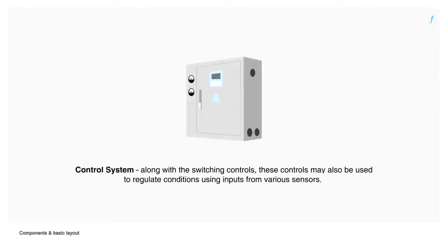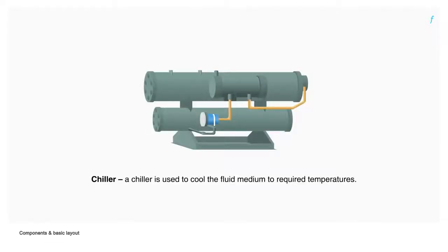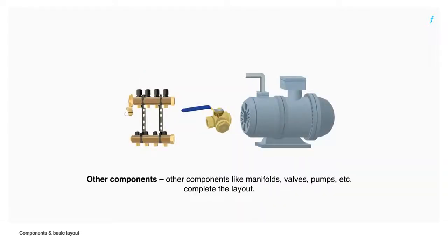Control system: Along with the switching controls, these controls may also be used to regulate conditions using inputs from various sensors. Chiller: A chiller is used to cool the fluid medium to required temperatures. Other components like manifolds, valves, pumps, etc. complete the layout.